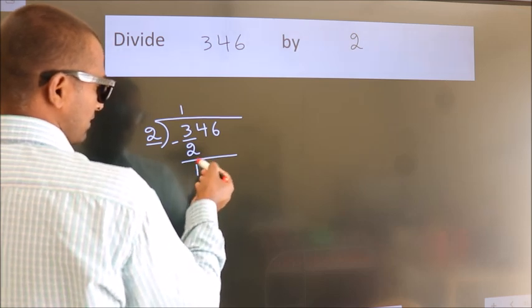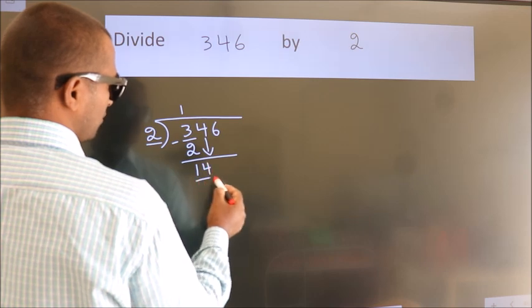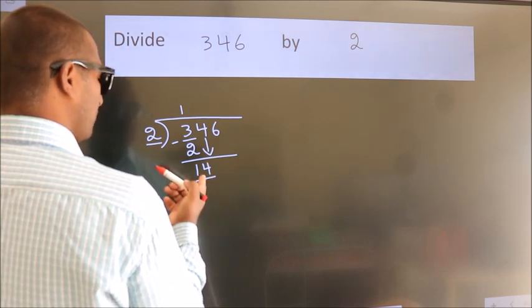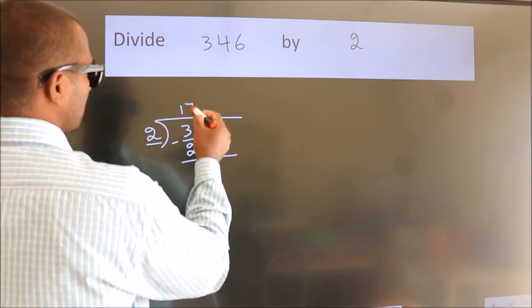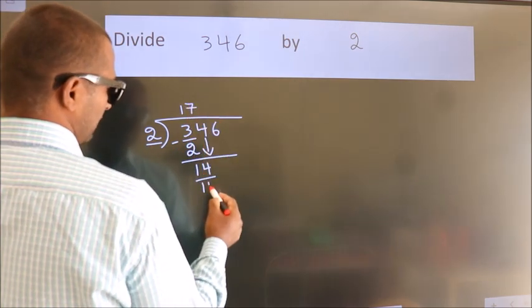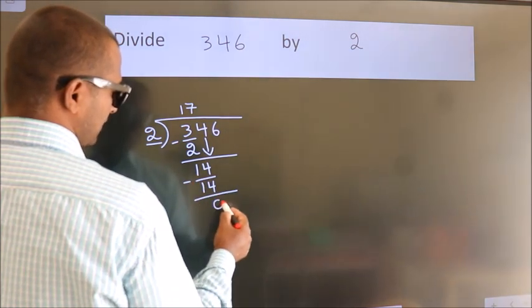After this, bring down the next number. So 4 down, giving us 14. When do we get 14 in the 2 table? 2 times 7 is 14. Now we subtract. We get 0.